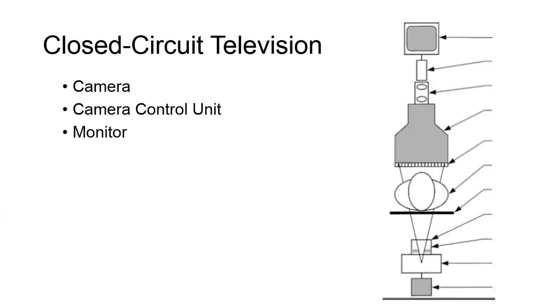Closed-circuit television systems transmit the video signal via cables to a set of monitors contained on one line. CCTVs typically have three components: the camera, the camera control unit, and the monitor.